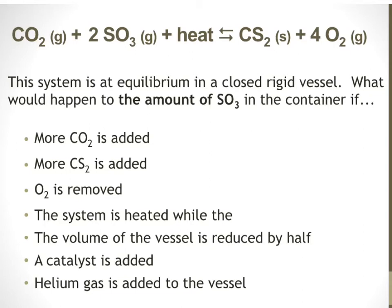We've got a balanced equation involving a heterogeneous equilibrium — most substances are gases, but there's one solid substance. If you have more than one phase, it's heterogeneous; if all phases are the same (e.g., all gases), it's homogeneous. The system is in a closed rigid vessel, so the volume does not change; it can't expand or contract, and it must be closed for equilibrium to be established.